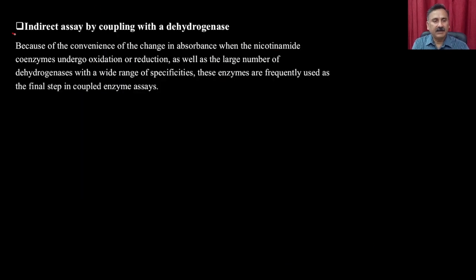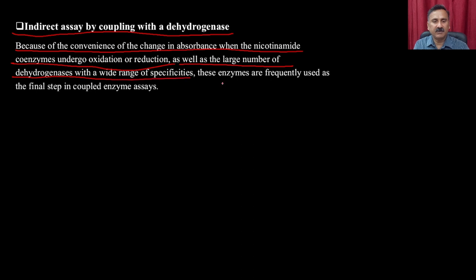The enzyme may be satisfactorily assayed at 30°C, pH 7.2 in 50 mM Tris, with substrate concentrations of 0.15 mM NADH and 1.2 mM sodium pyruvate. Because of the convenience of the nicotinamide coenzyme absorbance change and the large number of dehydrogenases, these enzymes are frequently used as a final step in coupled enzyme assays.